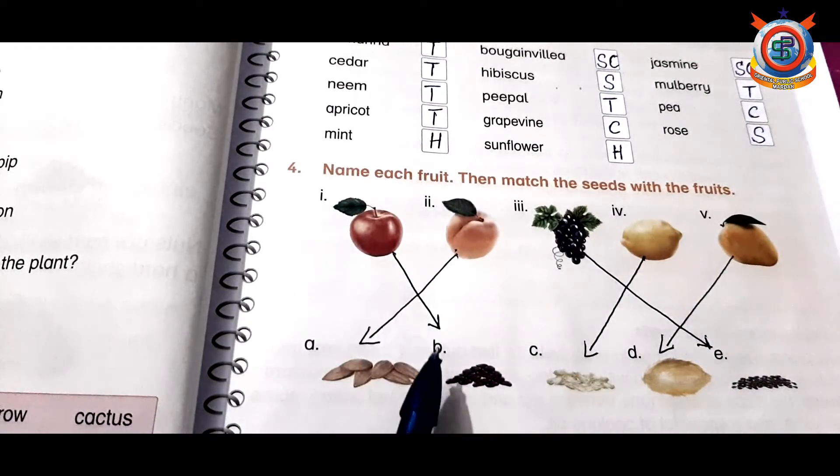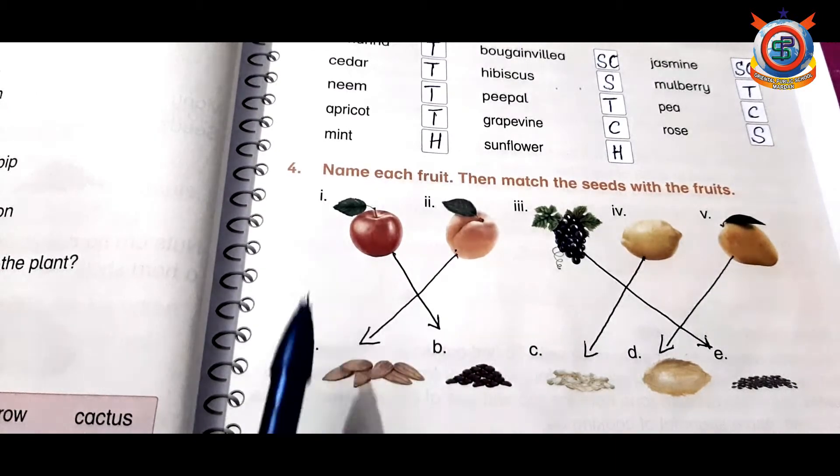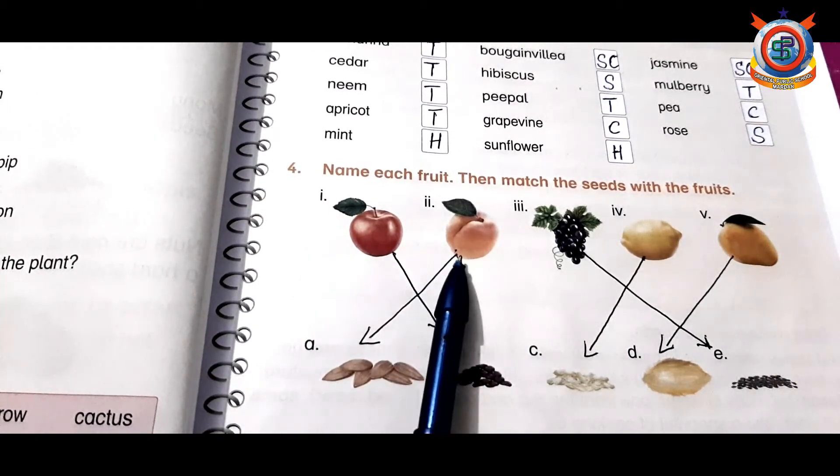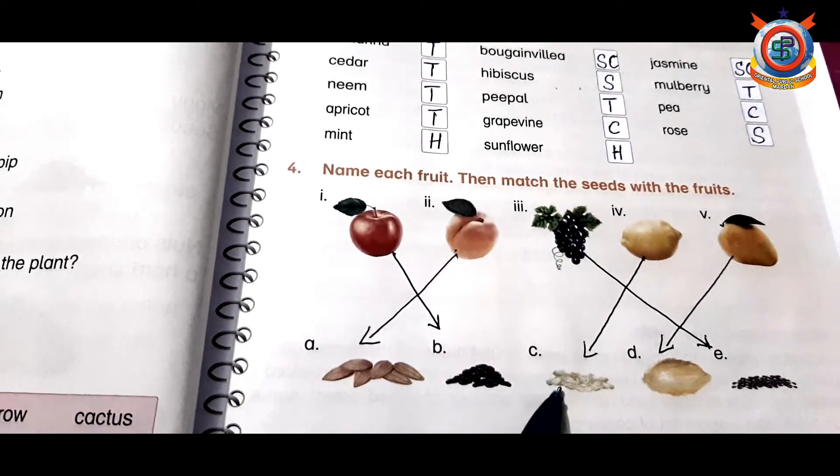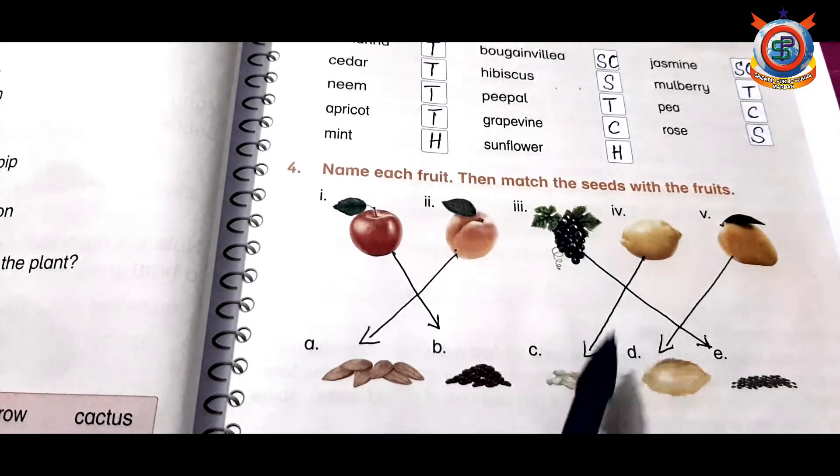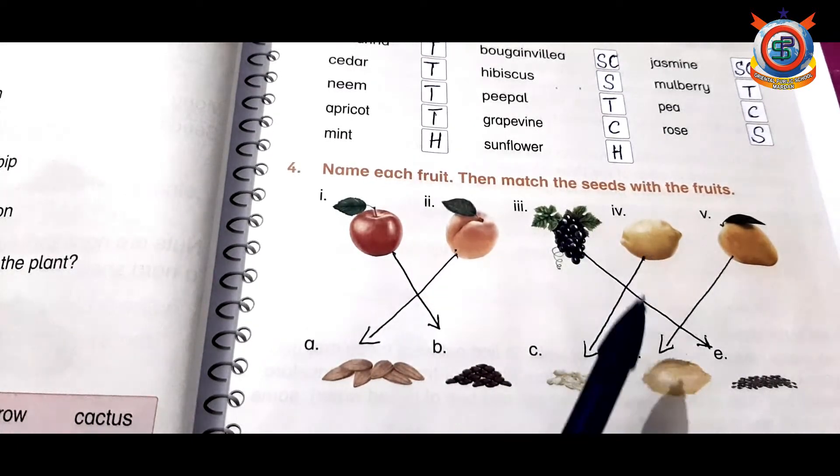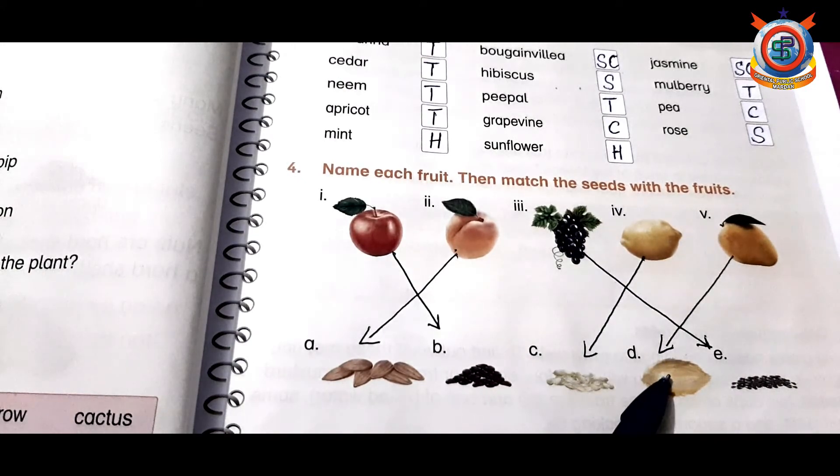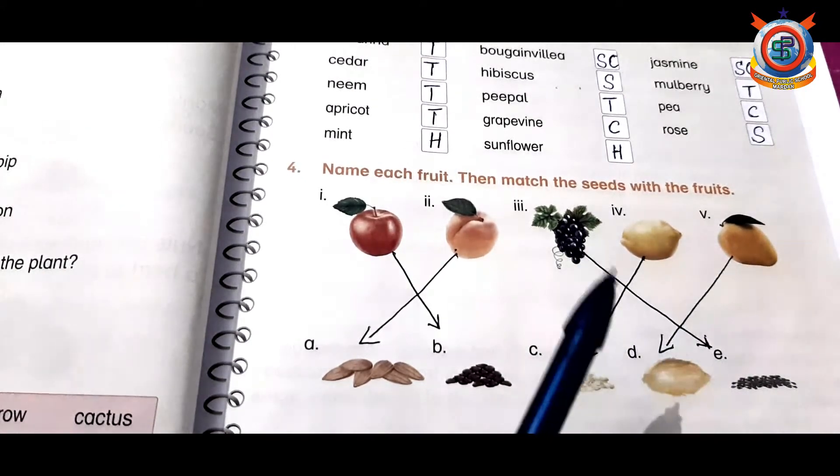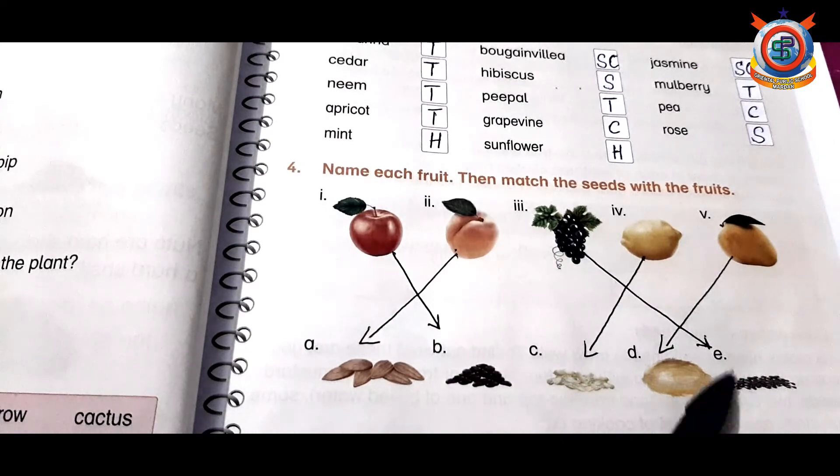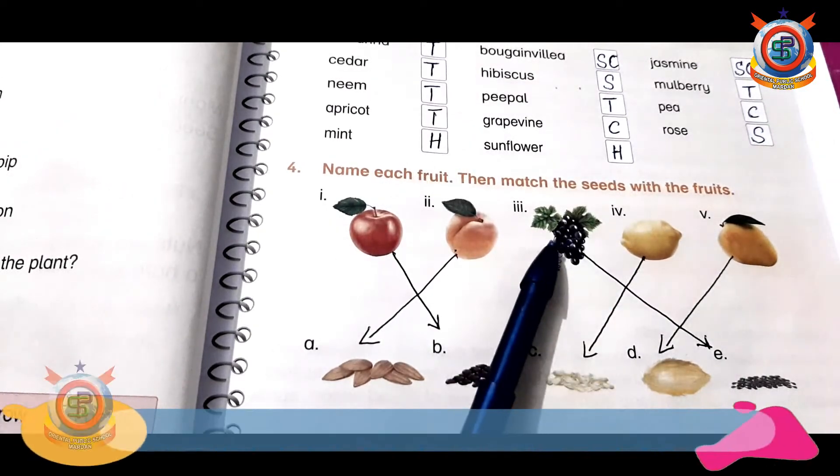B is a seed of apple. These are seeds of apple. A is for apricot. These are seeds of lemon. This is seed of mango. And these are seeds of grapes.